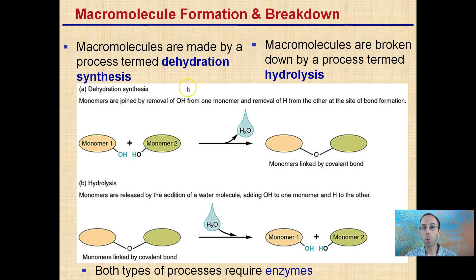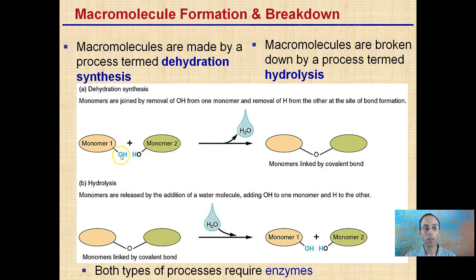Macromolecules can be formed or broken down. They are made by a process called dehydration synthesis. Dehydration is the loss of water — we see an OH and an H, also known as H2O, leaving. Two monomers are now linked together by a covalent bond. This is dehydration synthesis: we're synthesizing or putting two monomers together.